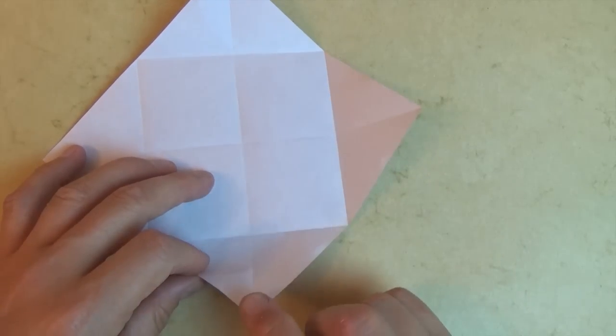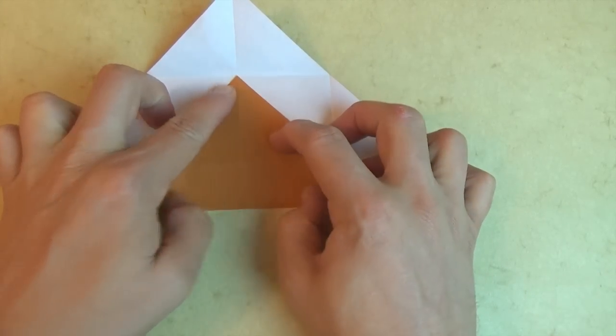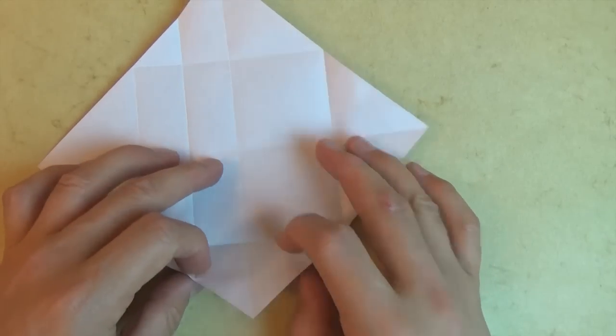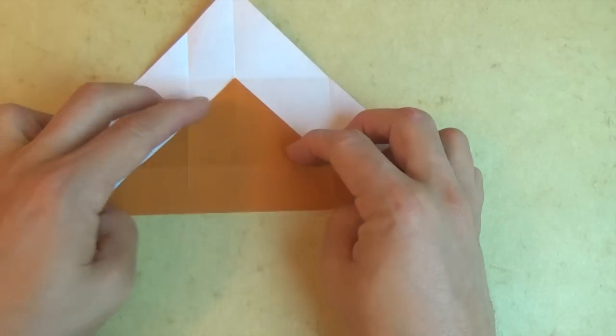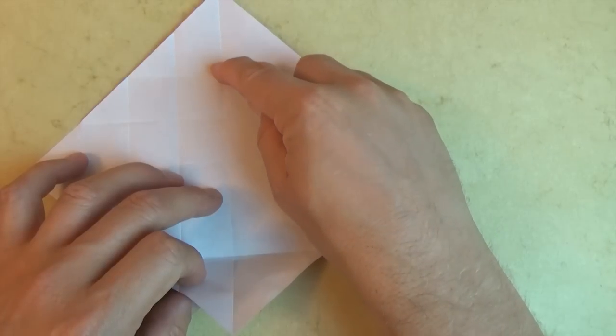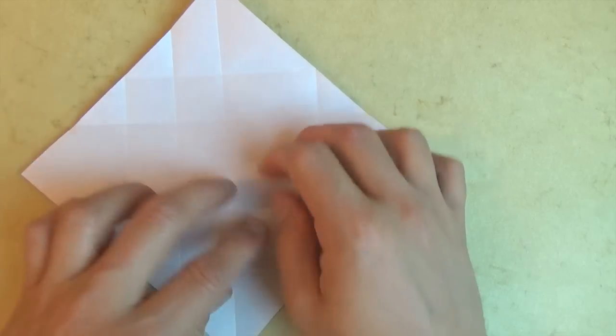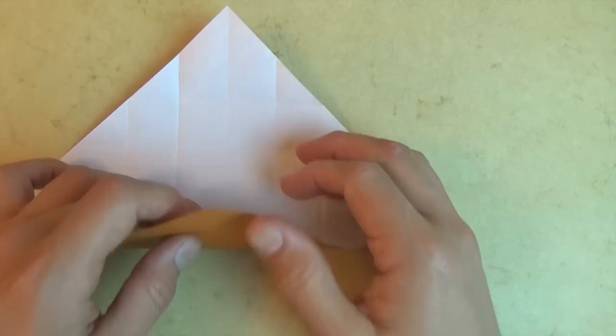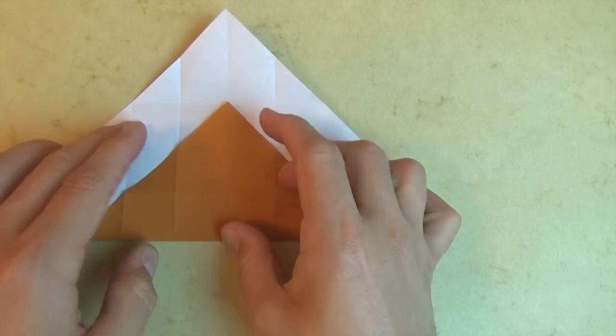And now let's fold this corner to this intersection point. And unfold and rotate. And let's fold this corner to this point. And unfold and rotate. And once again, let's fold this corner to this intersection. And unfold and rotate. And one last time, let's fold this corner to this intersection point. And unfold.